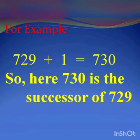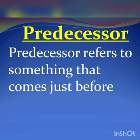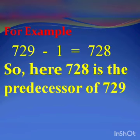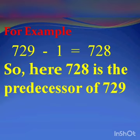we get its next number, that is 730. So 730 is the successor of 729. What is predecessor? Predecessor refers to something that comes just before. When we subtract 1 from a particular number, we get the previous number called its predecessor. For example, here the number is 729. If we subtract 1 from this number, we get its previous number, that is 728. Therefore, 728 is the predecessor of 729.